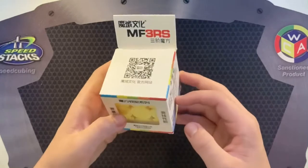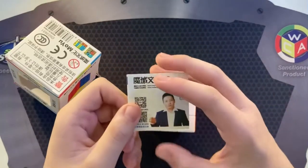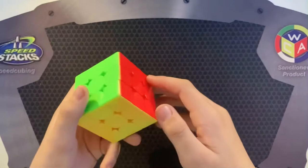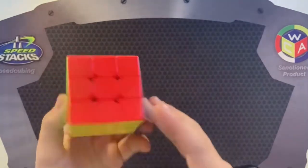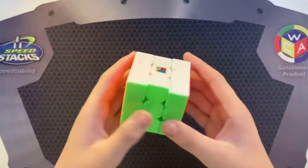So here's the MF3RS. Pretty normal box, nothing too special about it. I have like 20 of these so I don't need that. Pretty standard shades from MoYu like a couple years ago.